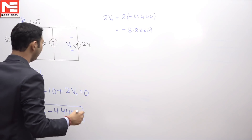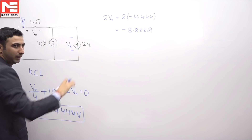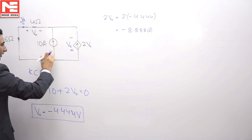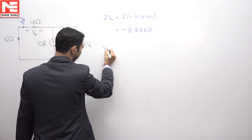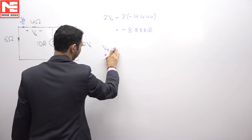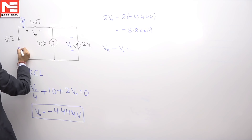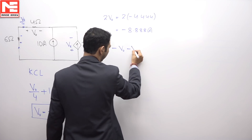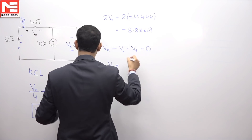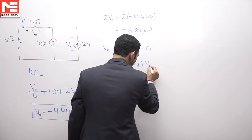Now I need to calculate the value of Vx — that is the voltage across this whole current source — because the current we have already calculated, and now we need the voltage to get the power. This Vx will be the same voltage across this branch because you can see this branch and this whole branch are connected in parallel. Therefore, if you apply KVL, you can see plus Vx minus V0 minus the voltage drop — because the same current will be flowing in the upward direction — minus the voltage drop across the 6 ohm resistor is equal to 0. So Vx will be equal to the whole resistance, 6 plus 4, multiplied by the current, that is V0 divided by 4.